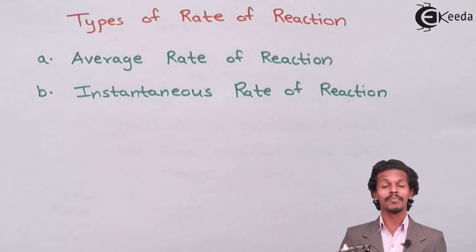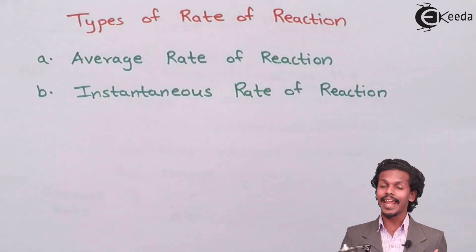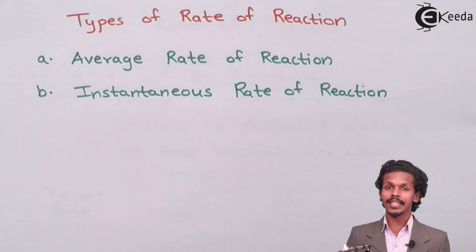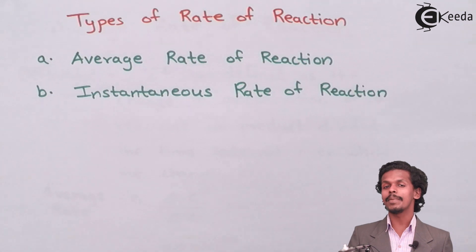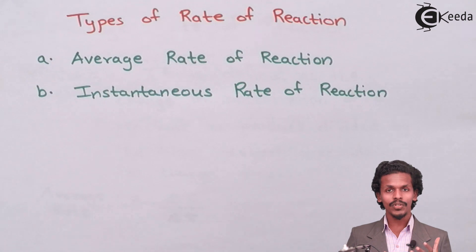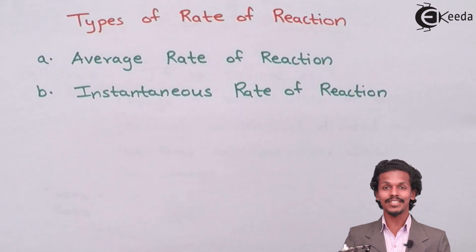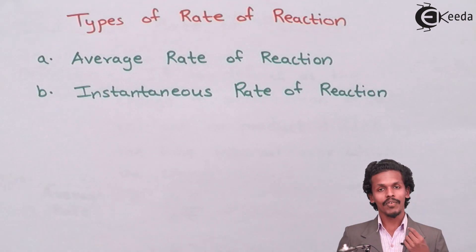The rate of reaction can be described in two types: average rate of reaction and instantaneous rate of reaction. Let me elaborate each type so that you could understand it. Both are not very difficult, so let us study them one by one.